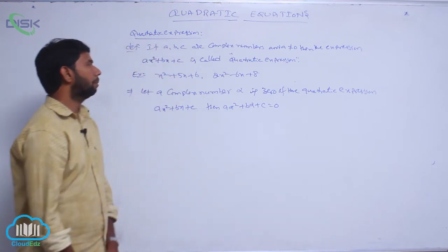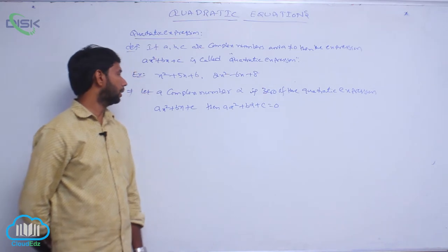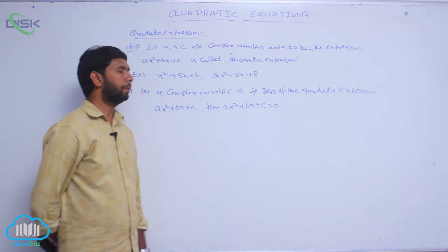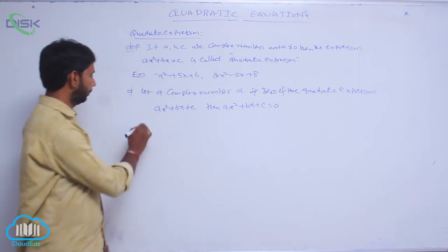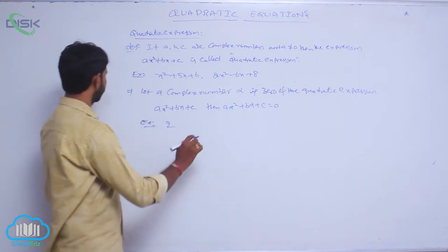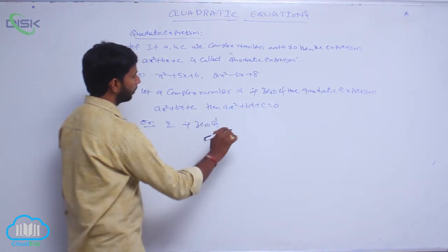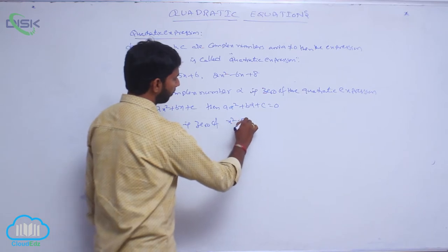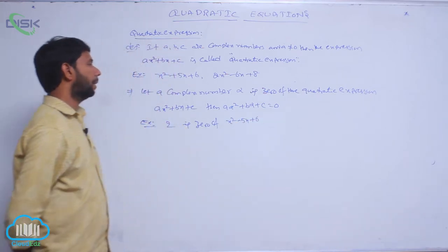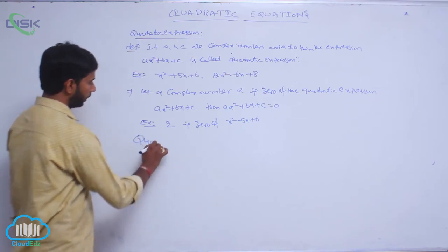Let a complex number alpha be the zero of the Quadratic Expression ax² + bx + c; then a·alpha² + b·alpha + c = 0. For example, 2 is the zero of the expression x² - 5x + 6.